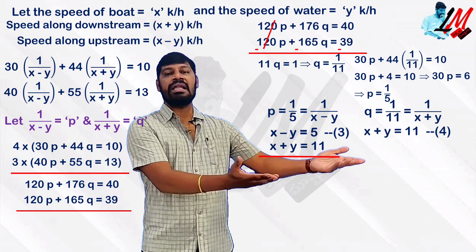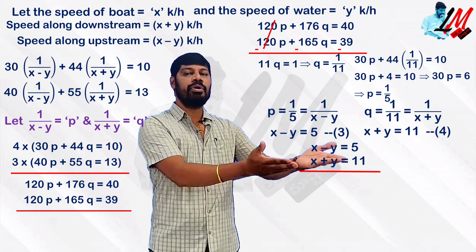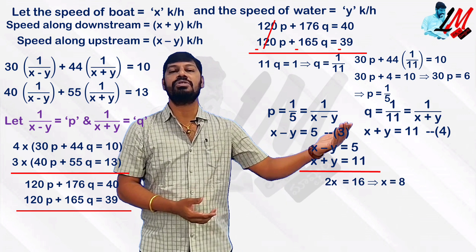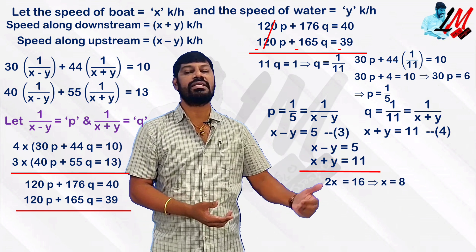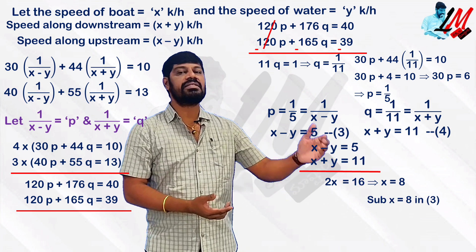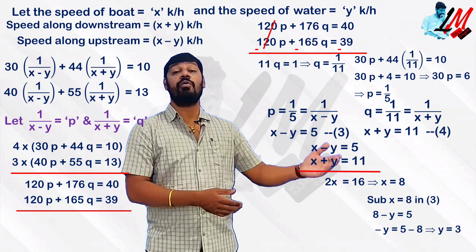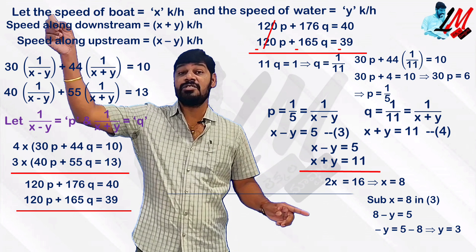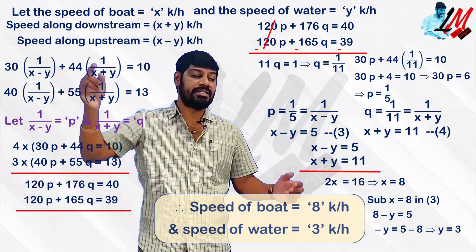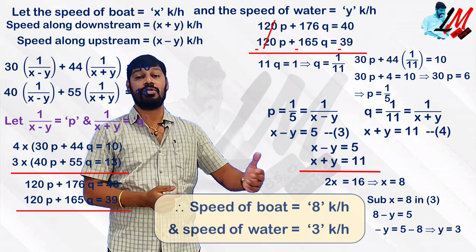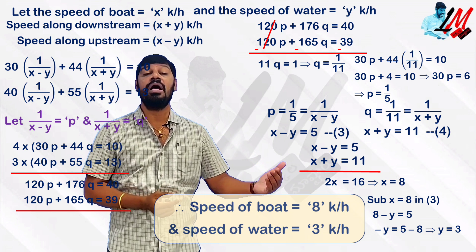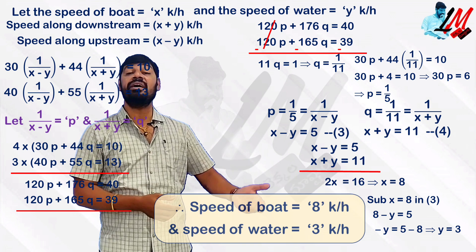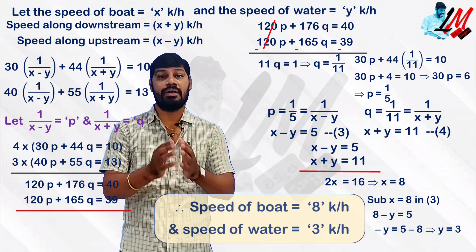Adding equations 3 and 4: the y terms cancel, giving 2x equals 16, so x equals 8. Substituting back, y equals 3. Therefore, the speed of the boat in still water is 8 km per hour, and the speed of the water is 3 km per hour.